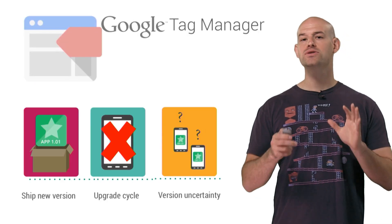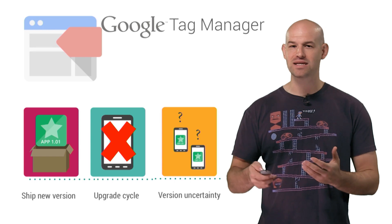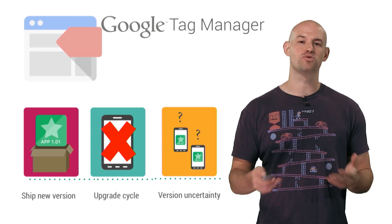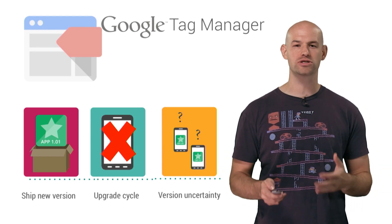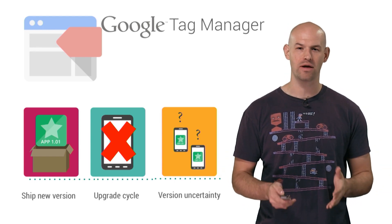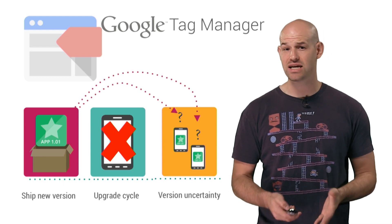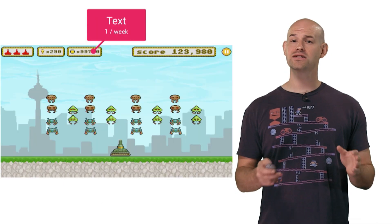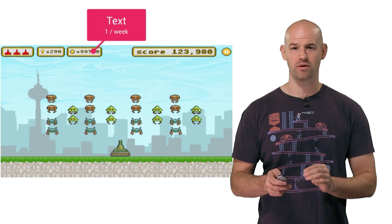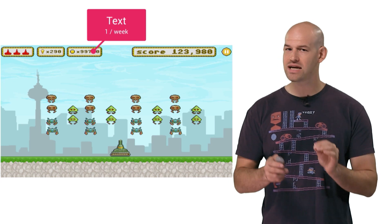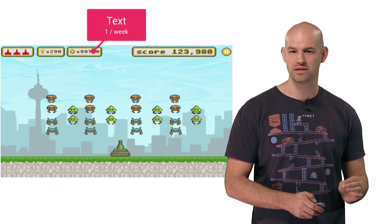Tag Manager is a cloud-based service to deliver various types of text-based data to devices around the world. It prides itself on removing the curse of the upgrade cycle and keeping all of your users' devices in sync with the latest data. It does this by relying on a key principle.